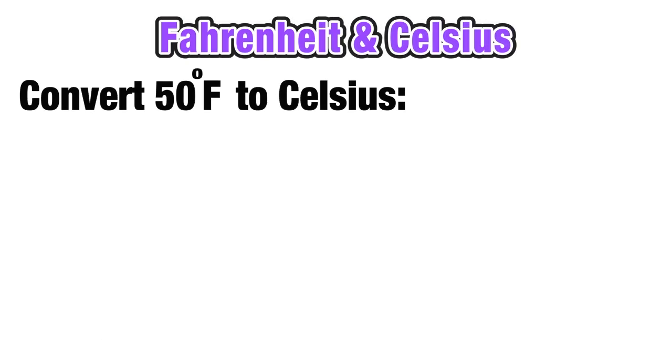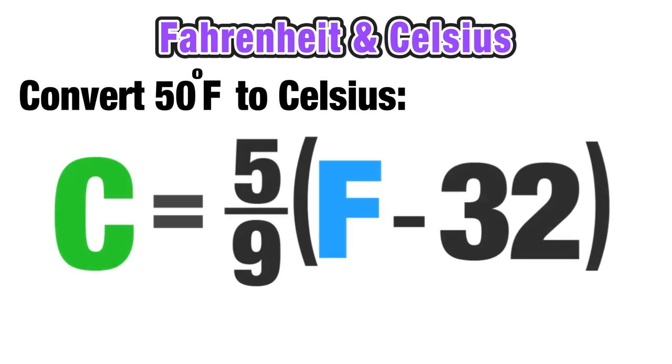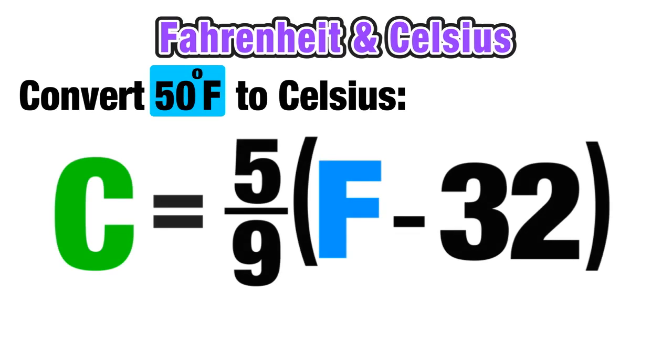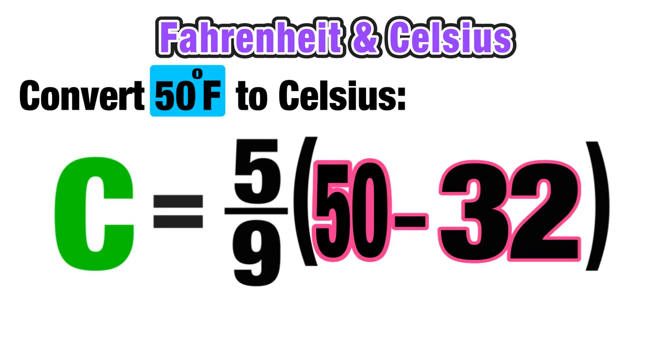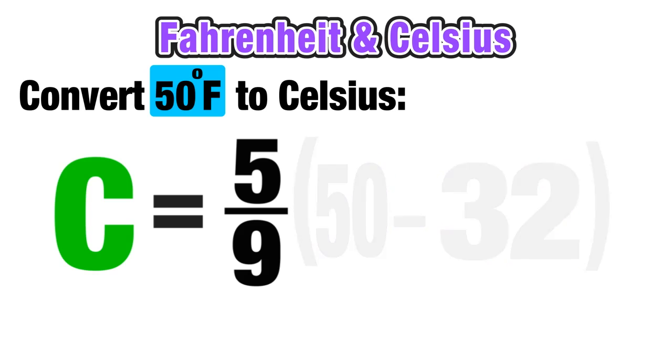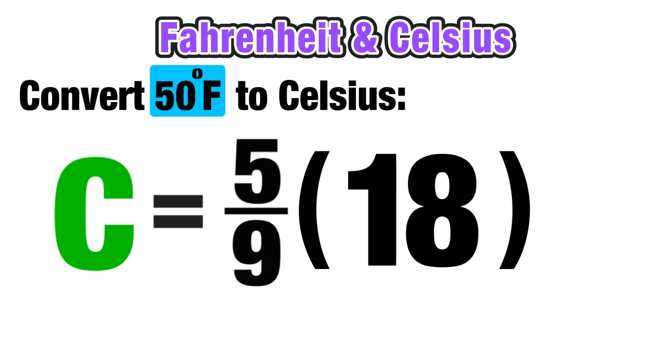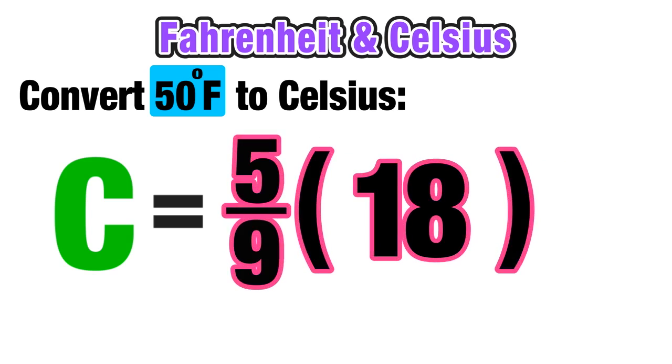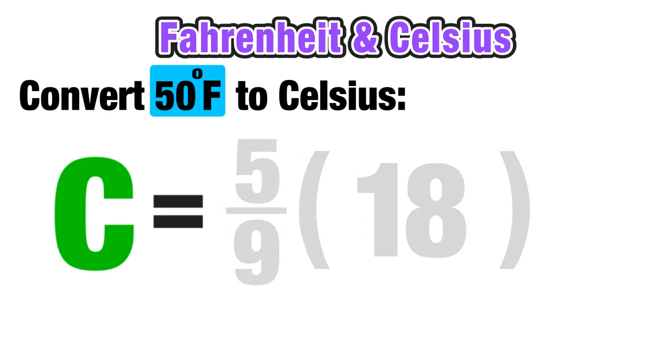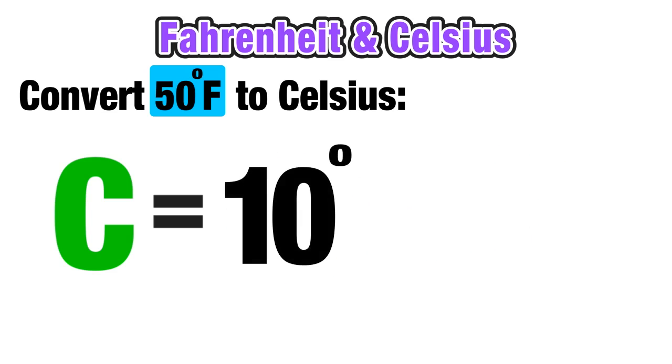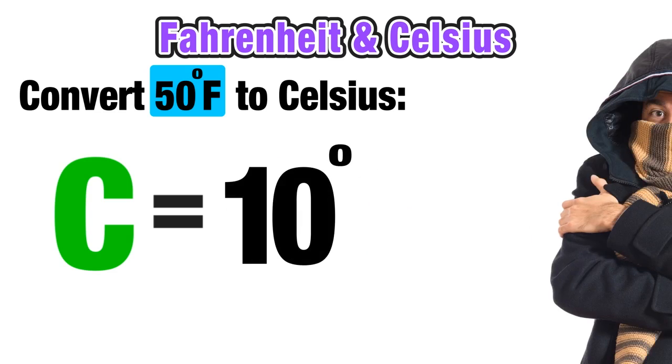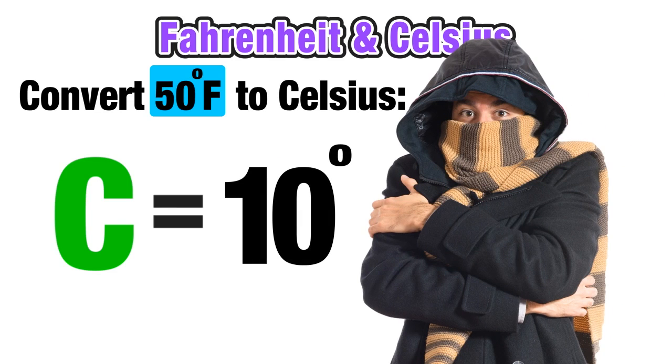For our next example, we want to convert 50 degrees Fahrenheit to degrees Celsius using the Celsius formula. Start by replacing F with 50. 50 minus 32 in parentheses equals 18, and then 5 over 9 times 18 equals 10. Again, if you're used to degrees Fahrenheit, you might think 10 degrees means the weather is going to be pretty cold, when actually it's really not even that bad.